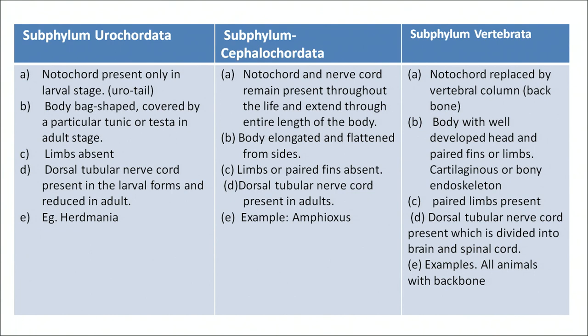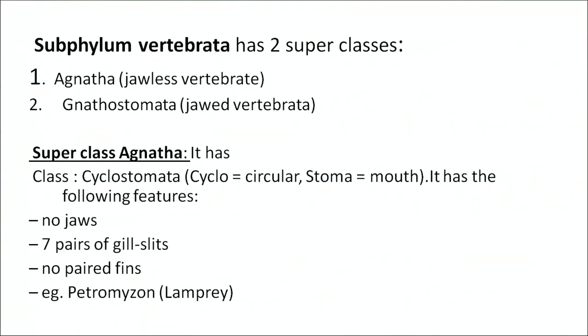The third subphylum is Vertebrata. The notochord is replaced by a vertebral column — the backbone. The body has well-developed head, paired fins or limbs, and a cartilaginous or bony endoskeleton. Paired limbs are present. The dorsal tubular nerve chord is divided into the brain and spinal cord. Examples are all animals with a backbone. Vertebrata is divided into two superclasses: Agnatha, meaning jawless vertebrates ('a' meaning no, 'gnathos' meaning jaw), and Gnathostomata, meaning jawed vertebrates.